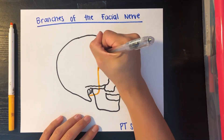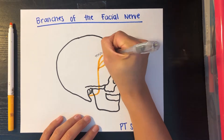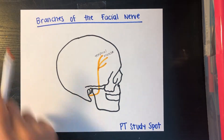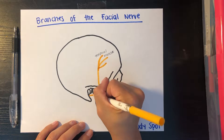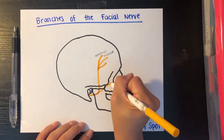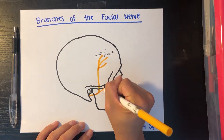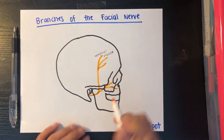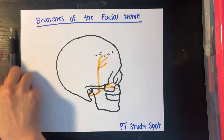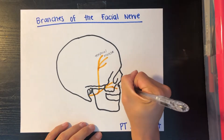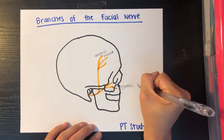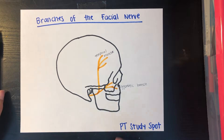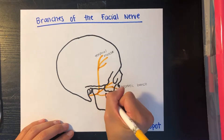Coming to the top you have your temporal branch, innervating the orbicularis oculi and the anterior and superior auricular muscles. Onto that zygomatic bone you have your zygomatic branch of the facial nerve, which innervates the orbicularis oculi and the transverse nasalis.